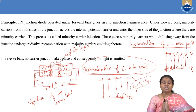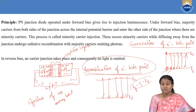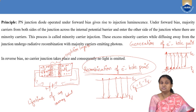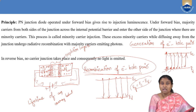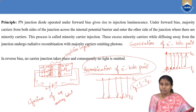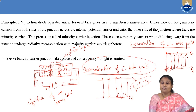When we forward bias the PN junction — where P type is connected to the positive terminal of the battery — apart from the width of the depletion layer decreasing, and at a threshold voltage where the depletion layer gets completely eliminated and there is flow of large current across the junction, one important point to note is that during forward biasing, electrons and holes move towards the depletion layer, lose energy equal to the forbidden energy gap.